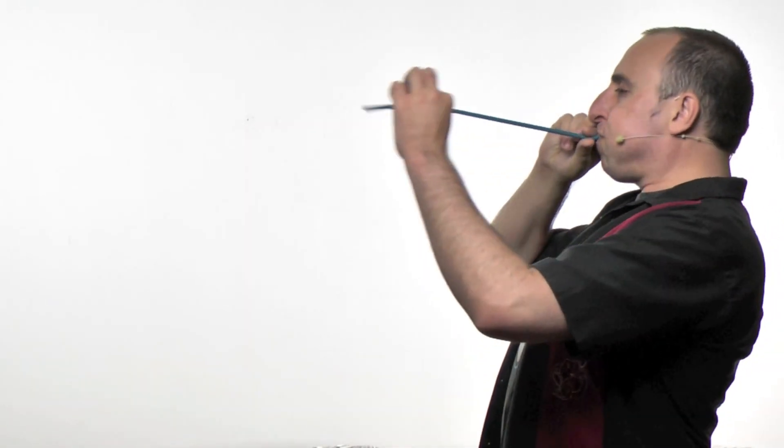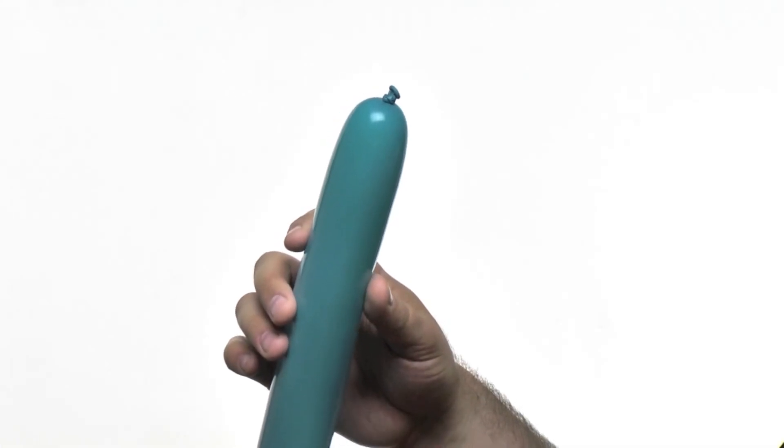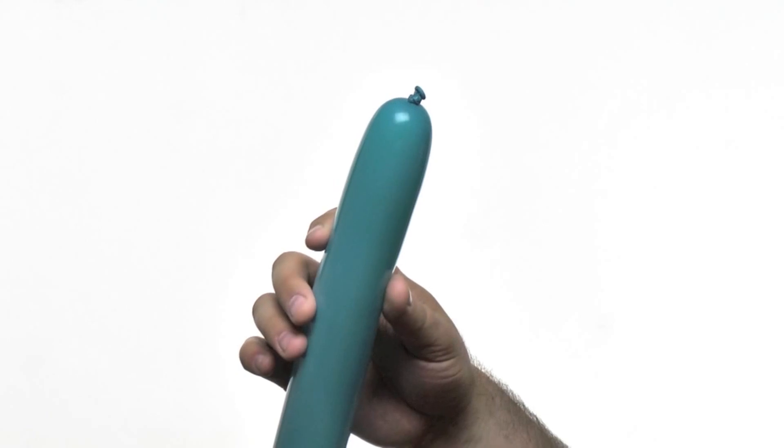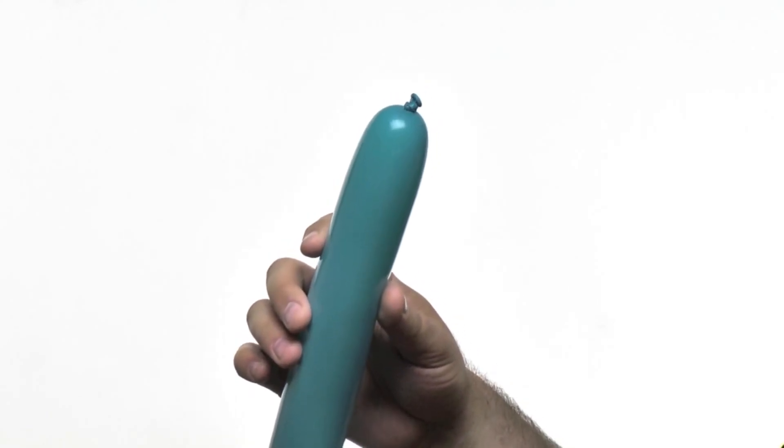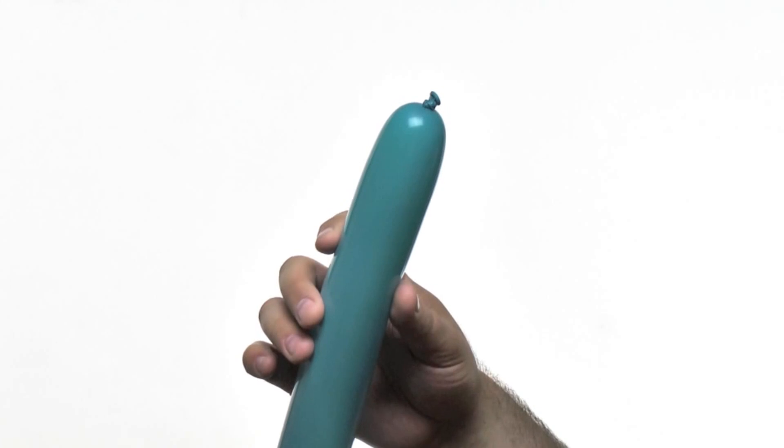You're going to need a 260 balloon, color of your choice, inflated about two-thirds of the way. What makes a balloon dog such a simple balloon animal is that it utilizes the lock twist three times: once for the ears and twice for each side of the legs. The lock twist is two equal segments that are locked together with an additional twist.